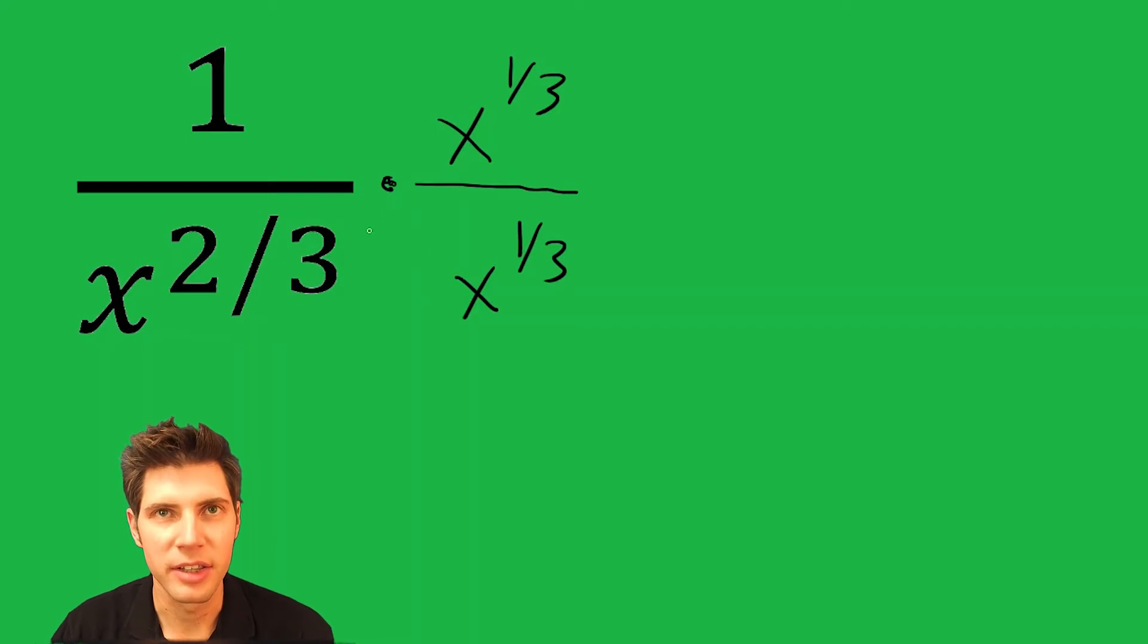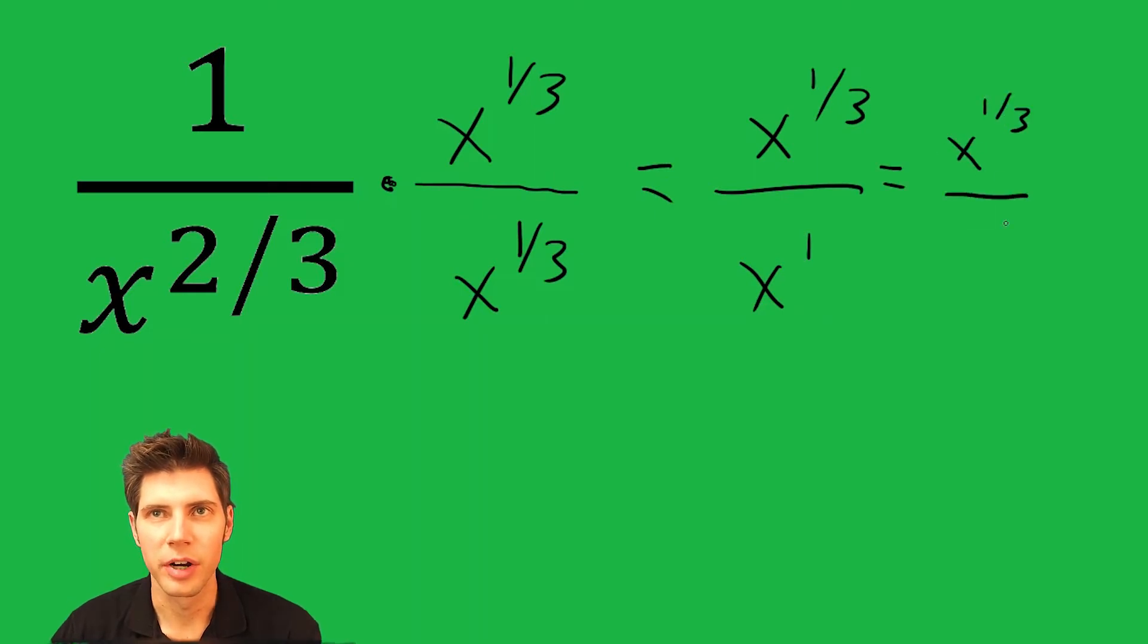The idea is that we're going to end up adding the exponents. So two-thirds plus one-third is x to the one. And then on top, one times x to the one-third is x to the one-third. So this is basically x to the one-third over x.